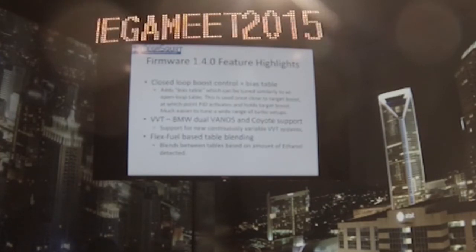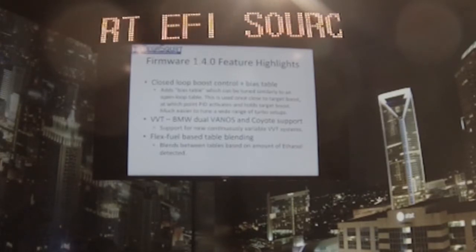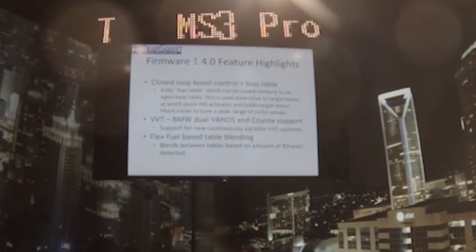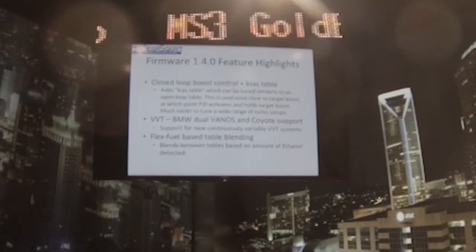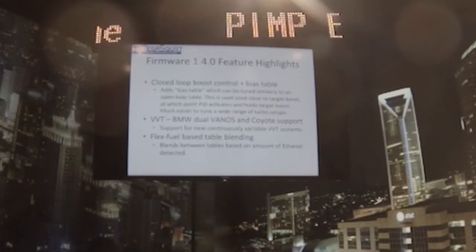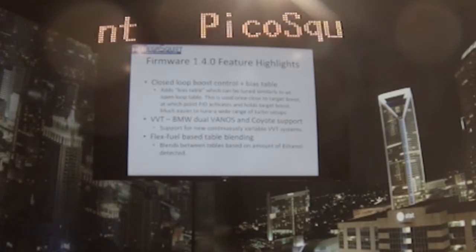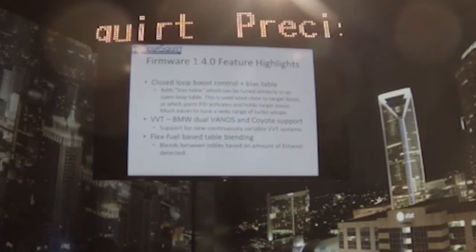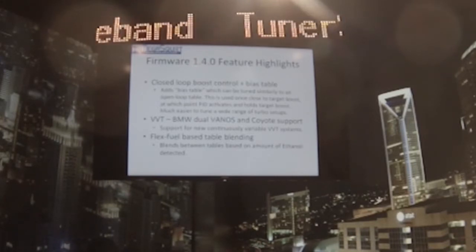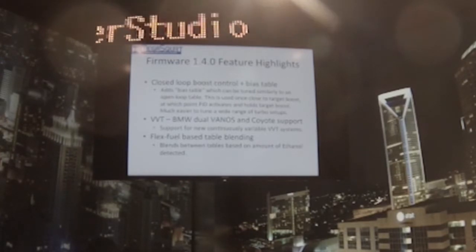So, feature highlights. We're not going to cover everything, because there's an awful lot of detail changes we've made over the last year and a half or so. We're going to cover some highlights: changes to closed loop boost control using a bias table, VBT changes for greater engine support, flex fuel changes for greater options, and table landings.